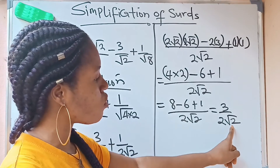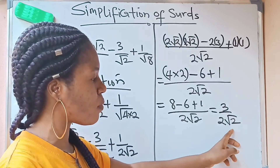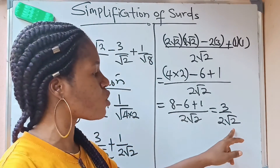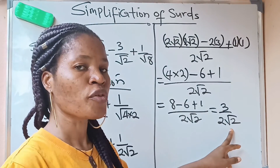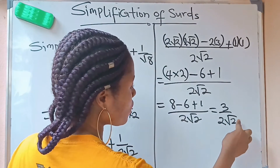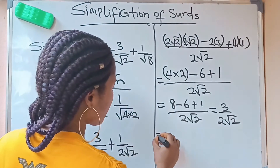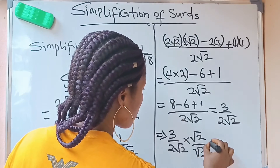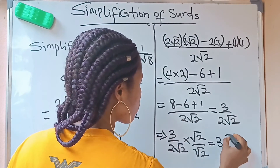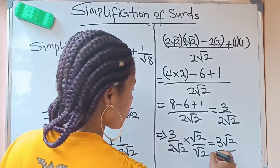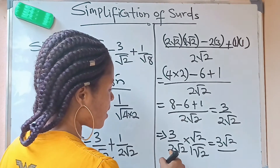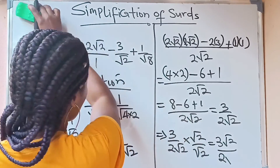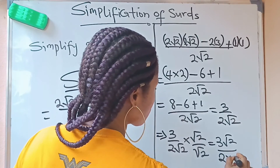Now looking at 3 over 2 root 2 — we notice there is a root 2 in the denominator. For this to be in its simplest form we need an ordinary number in the denominator, so we need to rationalize it. To rationalize, we multiply both numerator and denominator by root 2. So we have 3 over 2 root 2, times root 2 over root 2. The numerator becomes 3 root 2, and the denominator: 2 times 1 gives 2, and root 2 times root 2 gives another 2, so the denominator is 2 times 2 equals 4.